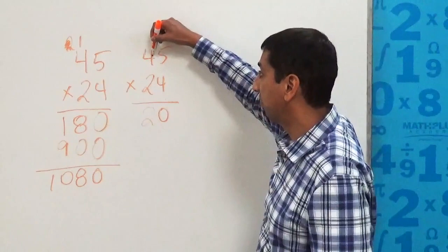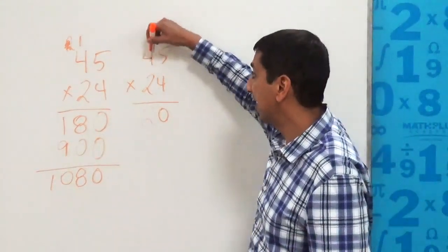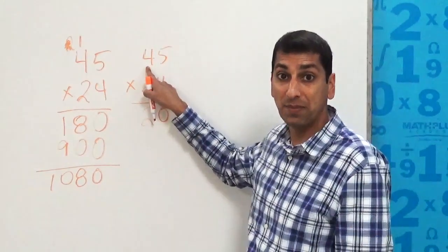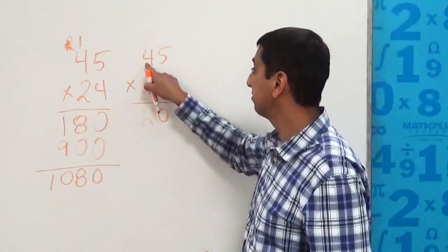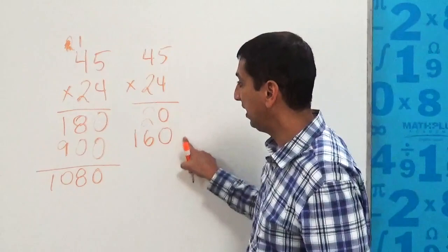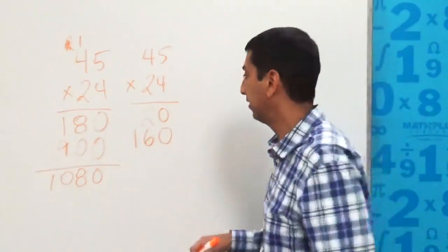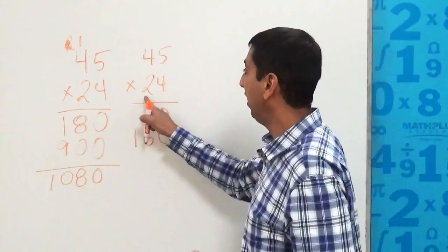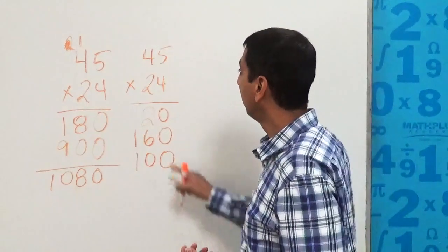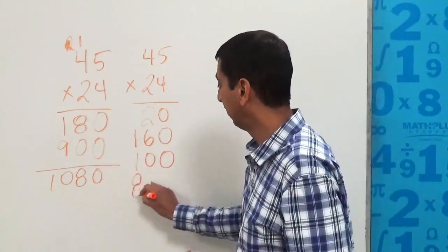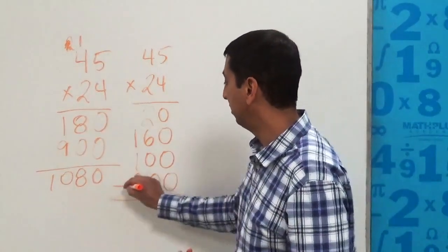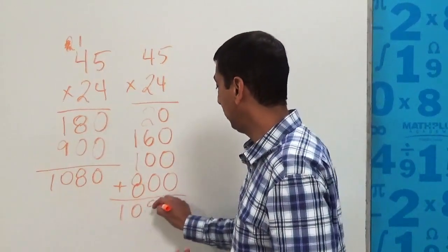The next is we're going to do four times this four, but we're teaching students that this is not a four. It is the digit four, but when it lives in this column, it actually represents 40. Four times 40 is 160, and you'll notice this is the 180 that was there, so there's nothing really different going on here, just in how I write it down. Then I have not two, but 20 times five, which is 100, and I have 20 times 40, which is 800. You'll notice these two here are 900. We'll add them all up, and we will get 1,080 again.